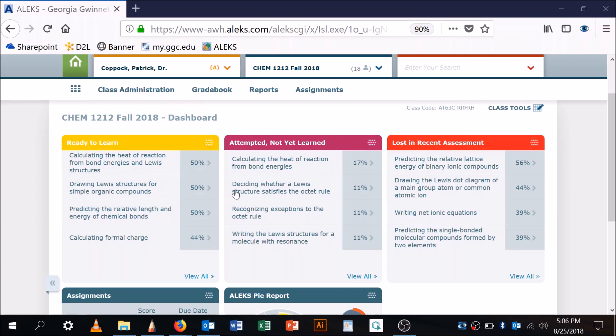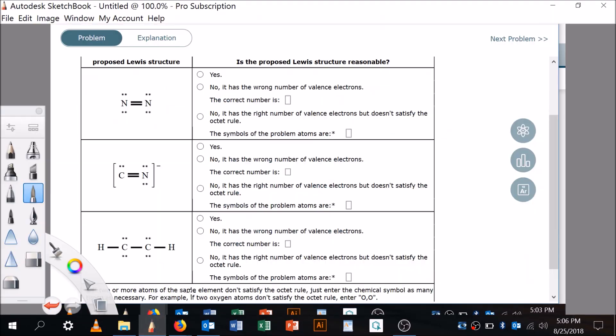Deciding whether a Lewis structure satisfies the octet rule. 11% have unsuccessfully attempted that. So let's go here. Already set the whiteboard up.